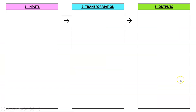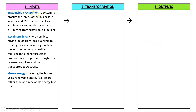Then we get to the operation system: inputs, transformation, outputs — looking at some possible CSR issues. Within inputs, sustainable procurement is key. The business should buy sustainable materials from sustainable suppliers and try to use local suppliers instead of foreign ones. This creates jobs in Australia and reduces the carbon footprint, since goods transported by ship or plane from far away have a large footprint. The business could also use green energy, such as solar or other renewable energy rather than non-renewable energy.